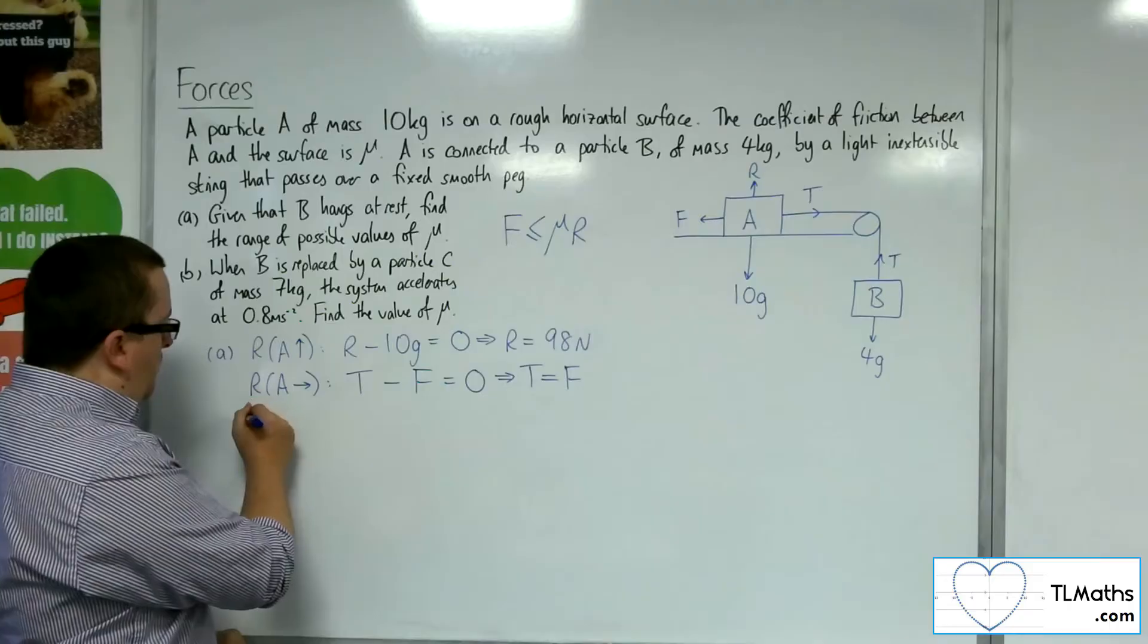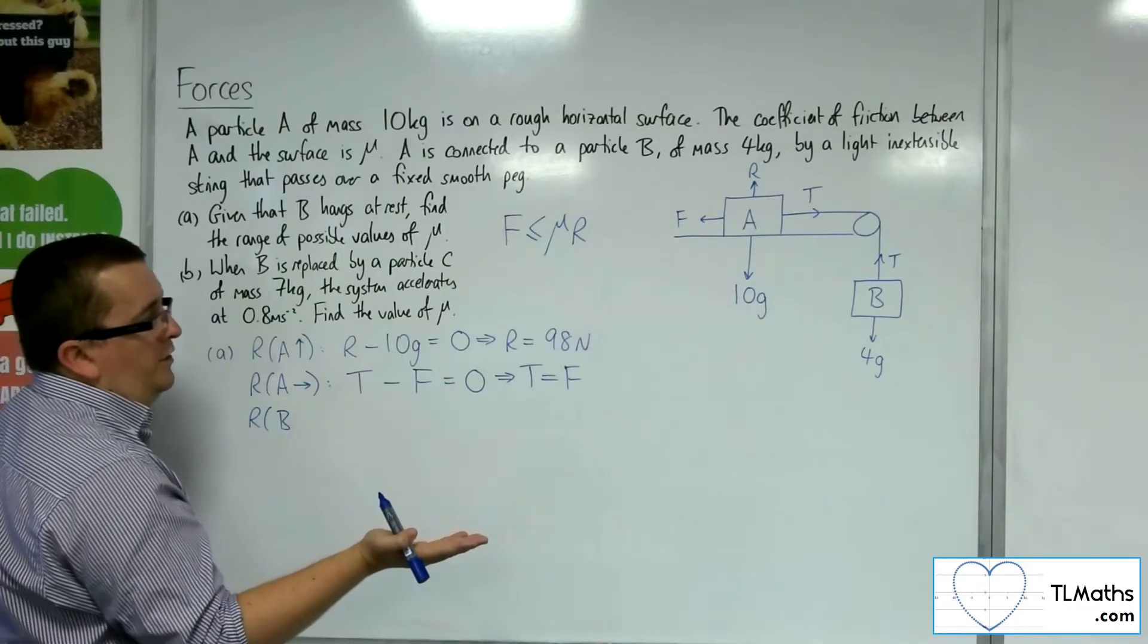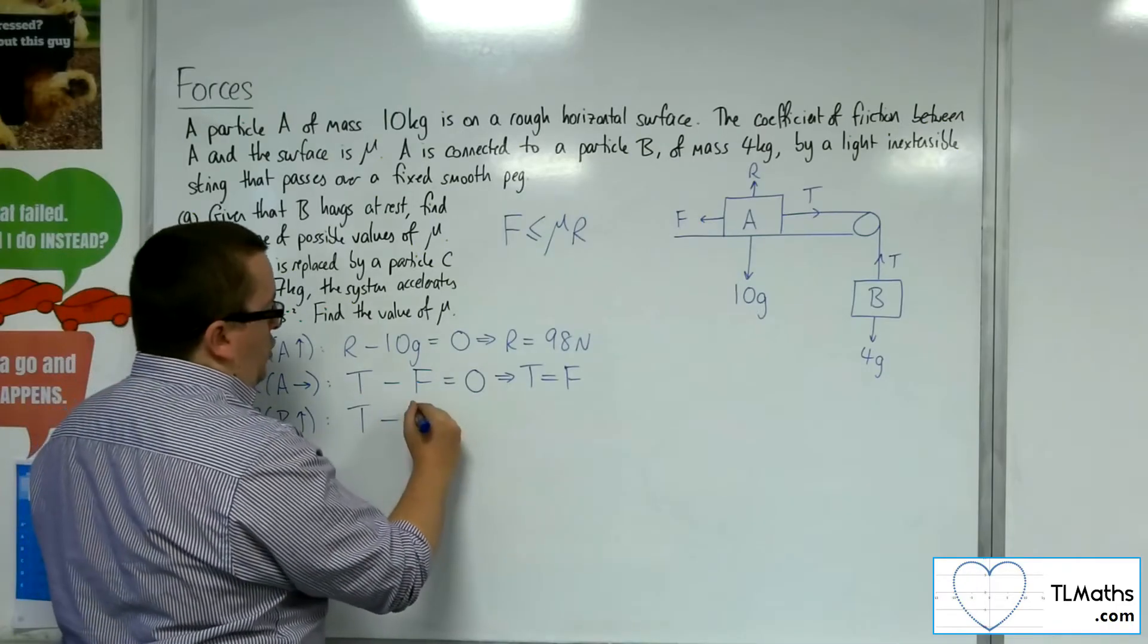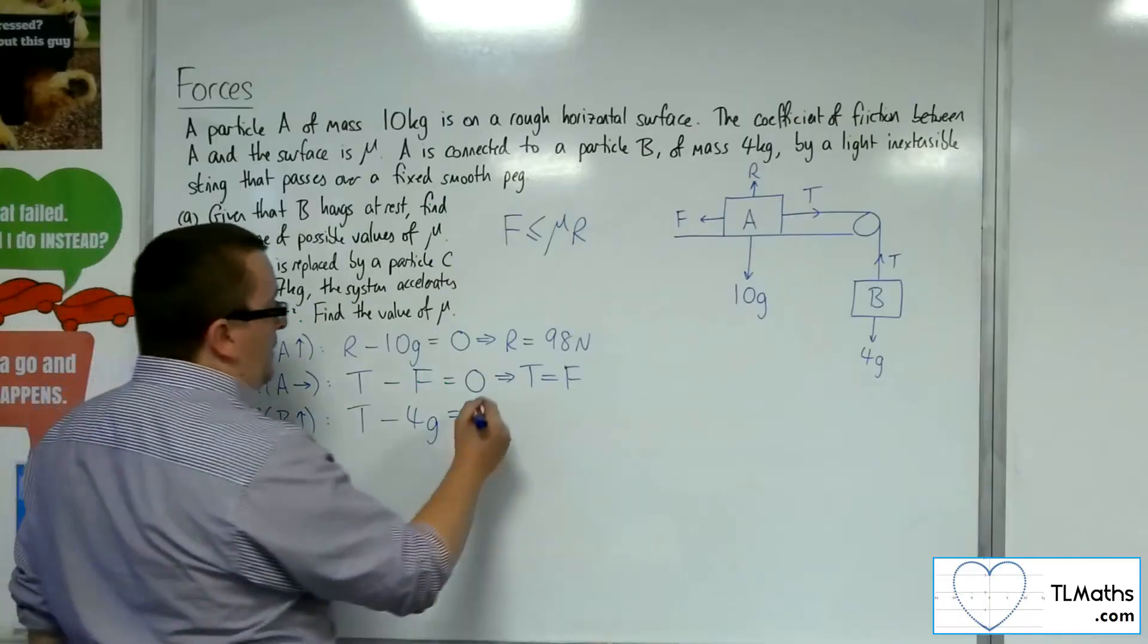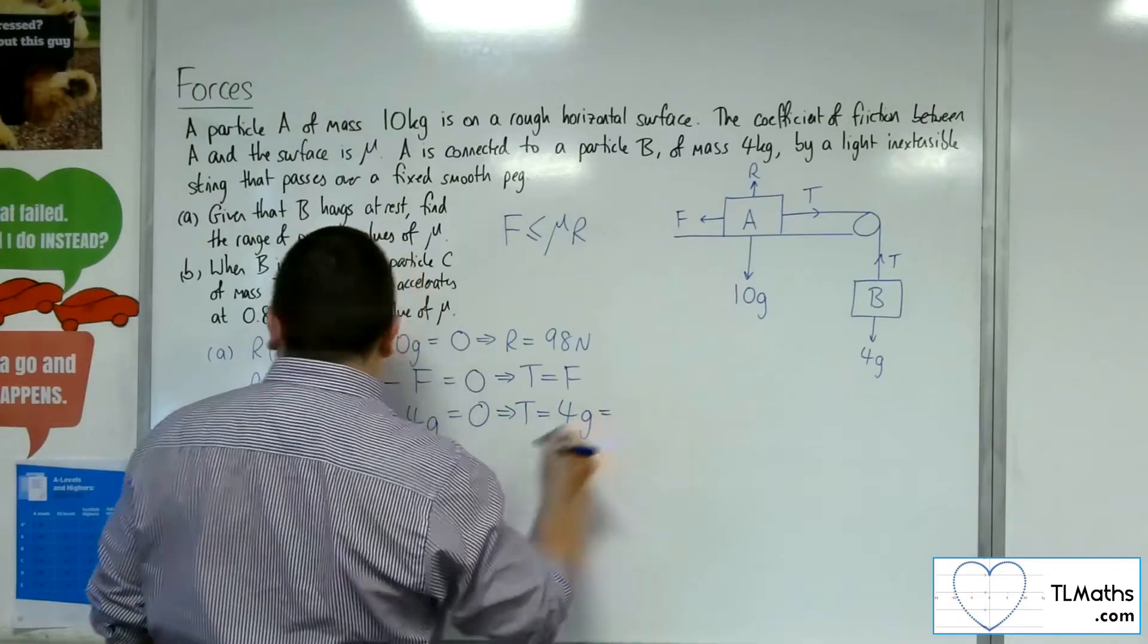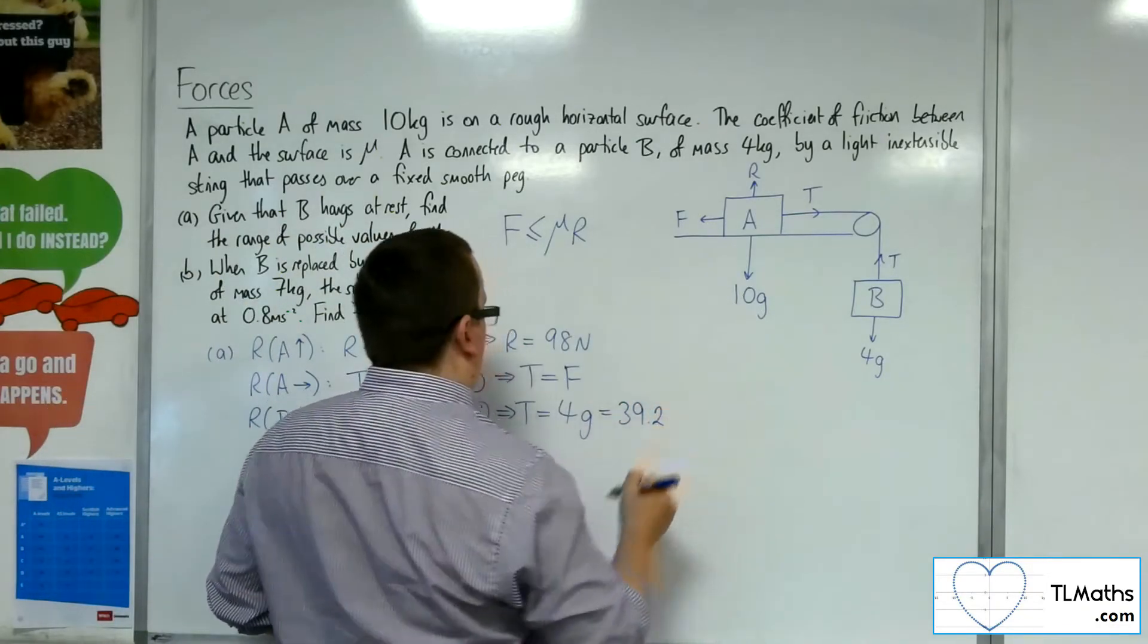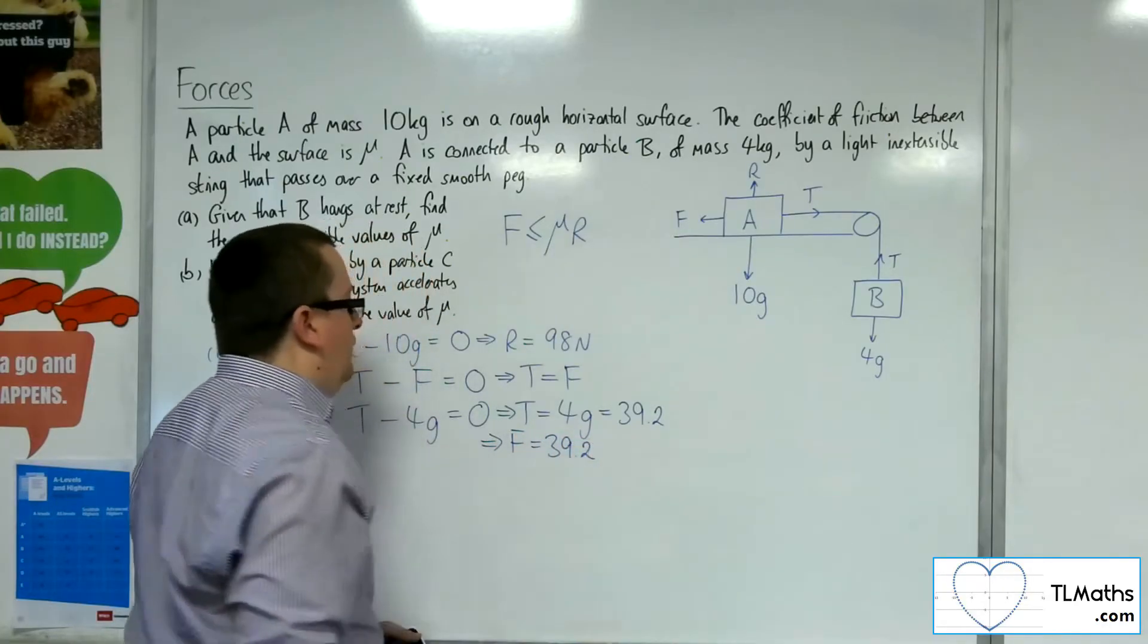Now, if I now look at particle B, and I resolve that taking upwards as positive, I've got the tension working upwards, I've got 4g, the weight, working downwards. There's no acceleration. The system's at rest, and so that's 0. So T is equal to 4 lots of G. So 4 lots of 9.8 is 39.2. So that means that F must be 39.2.